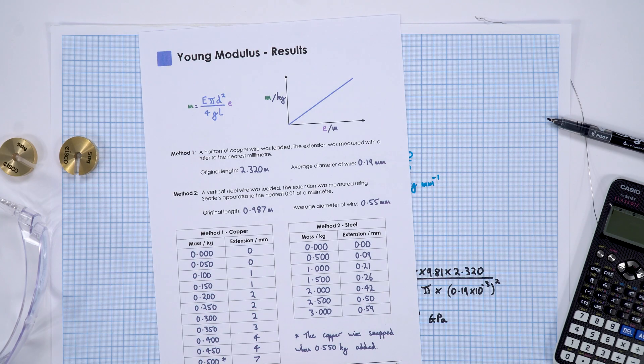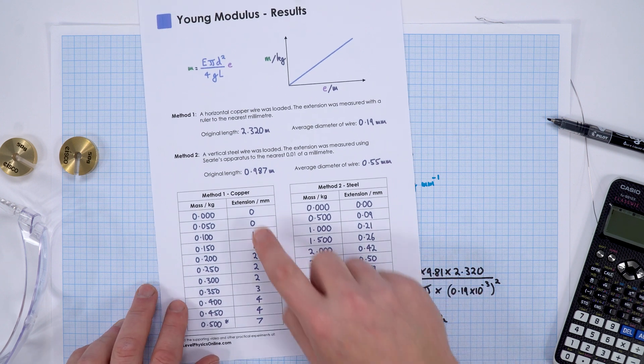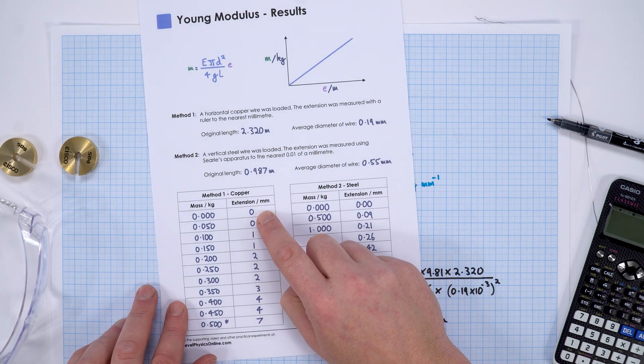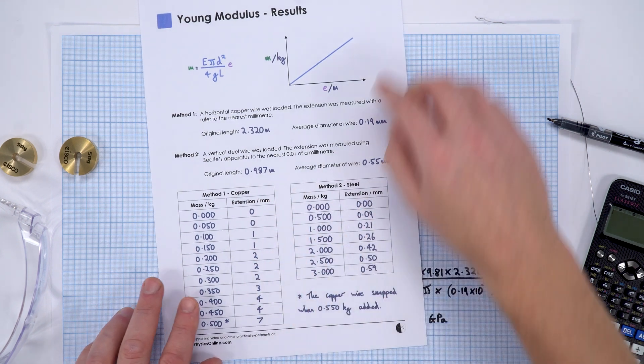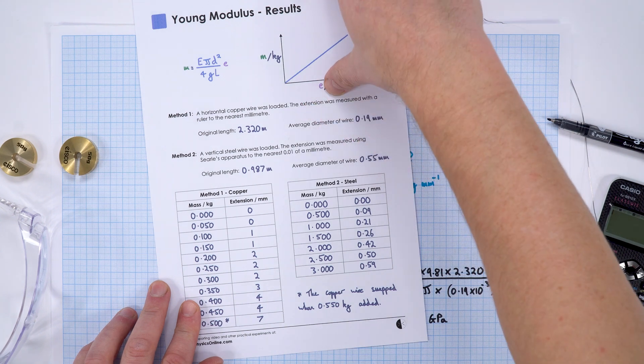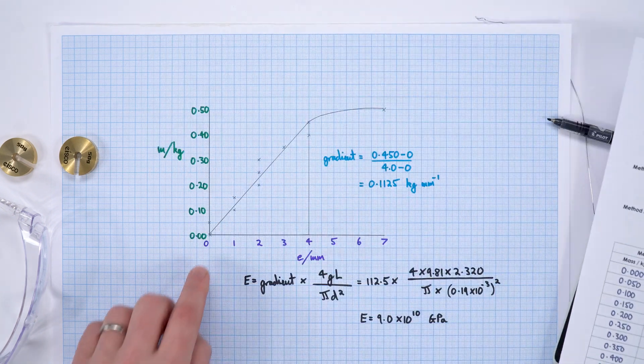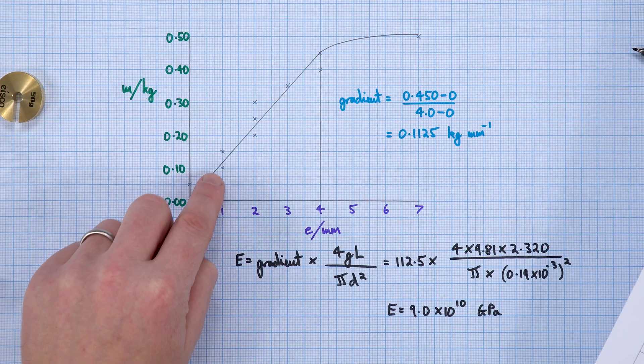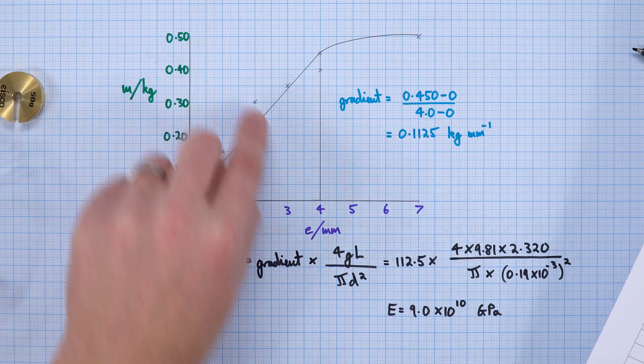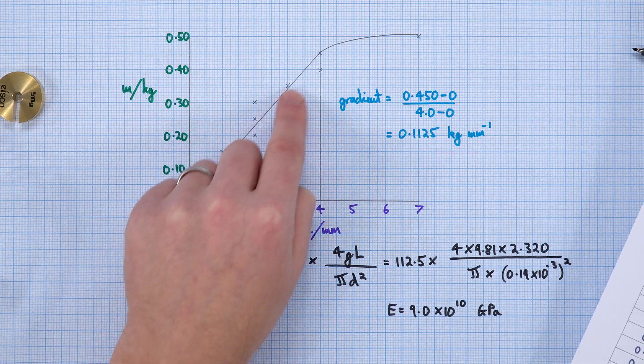The limitation of this was because I used a ruler, we could only measure the extension to the nearest millimeter. When it came to plotting the data, the graph looks a bit weird because we have quite a lot of things in line.